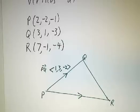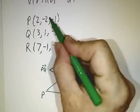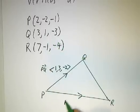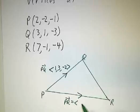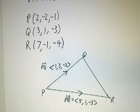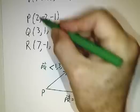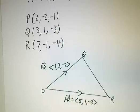So PR, we subtract P from R, and we get that PR is 5, 1, negative 3. That's 7 minus 2, negative 1 minus negative 2, negative 4 minus negative 1.